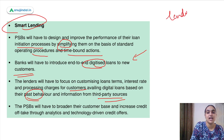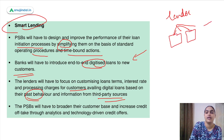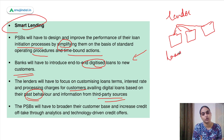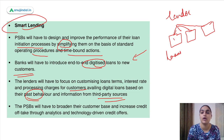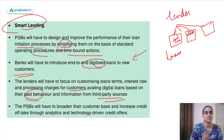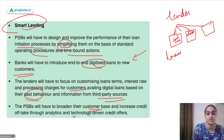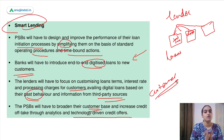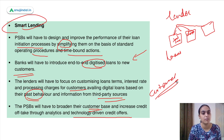Lenders can get information about borrowers' past behavior from third-party information providers and accordingly devise loan terms. The goal is to increase the credit off-takes through technology-driven credit offers and expand the customer base. Using technology to simplify, digitize, and customize the way loans are provided — that is called Smart Lending.